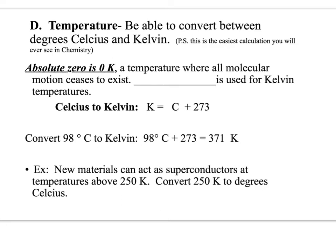Let's take a few minutes to discuss temperature. One thing you will have to be able to do in this class is to be able to convert between Celsius degrees and Kelvin, and it is the easiest calculation of all. First of all, let's talk about what absolute zero is. It's a temperature where all molecular motion ceases to exist.